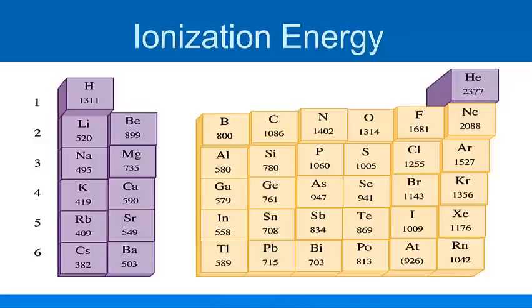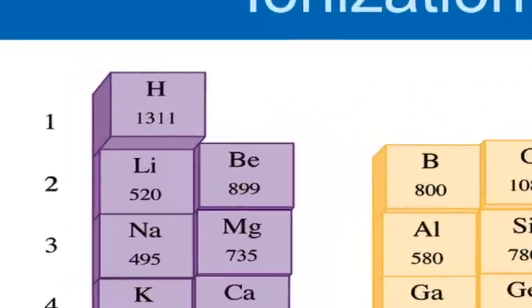If you look at this image, what we have here are, again, the main group elements. We don't really mess with the transition metals all that much. And the numbers in each of these squares is the number of kilojoules, thousands of joules of energy, per mole of that element required to take away those electrons. So in order to take away hydrogen's only electron, it takes 1,311 kilojoules of energy to remove a mole of hydrogen atoms' electrons.